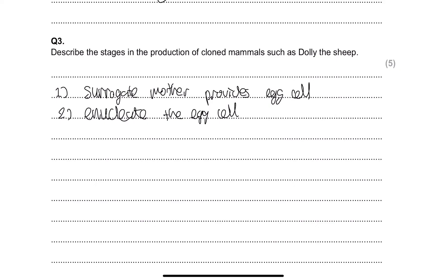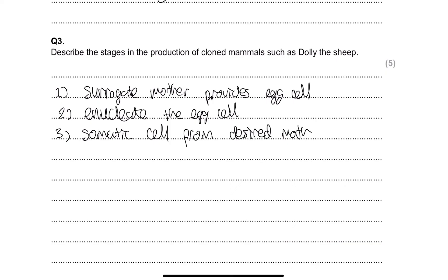Enucleating means removing the nucleus from the egg cell — we're simply removing the nucleus. Now we have an empty egg cell with no nucleus. To fill it, we take a somatic cell — an adult body cell — from the desired mother. This somatic cell nucleus is what determines the clone, because the offspring will be a clone of whatever individual the somatic cell is taken from. The nucleus is then removed from this somatic cell.